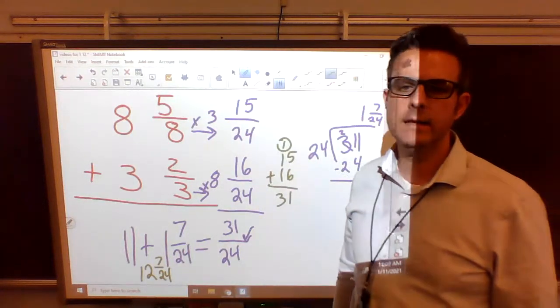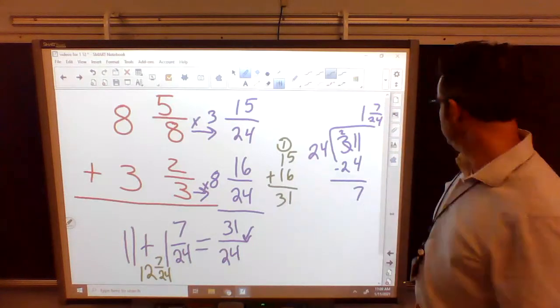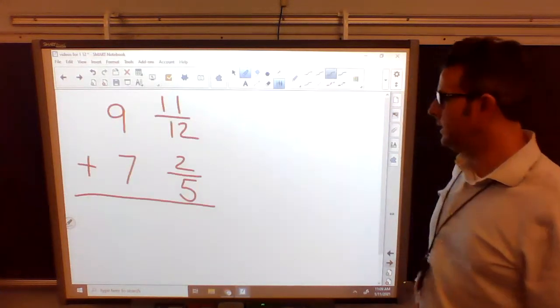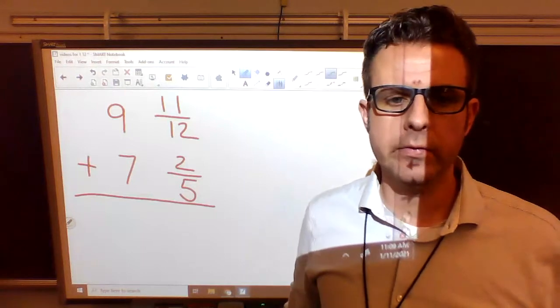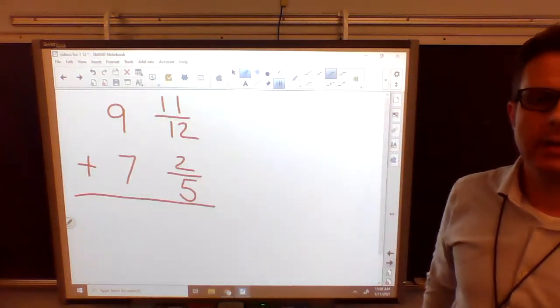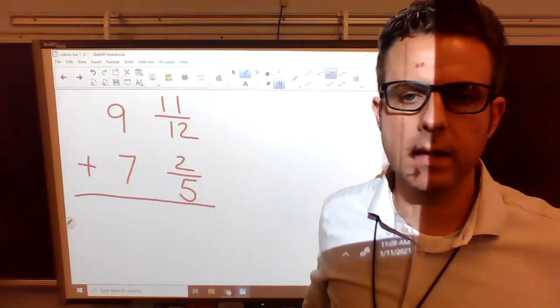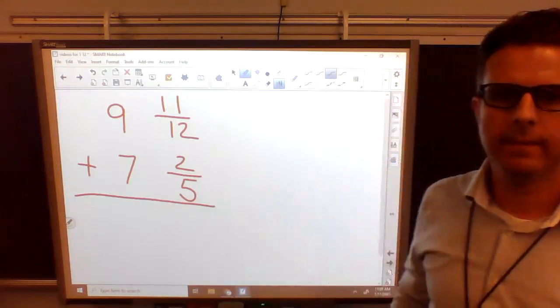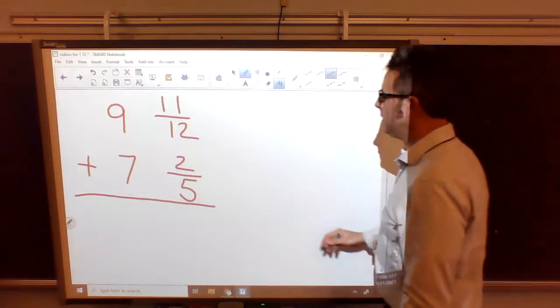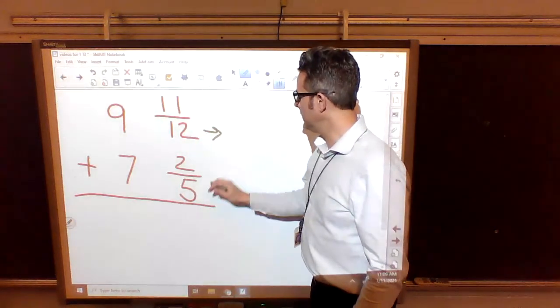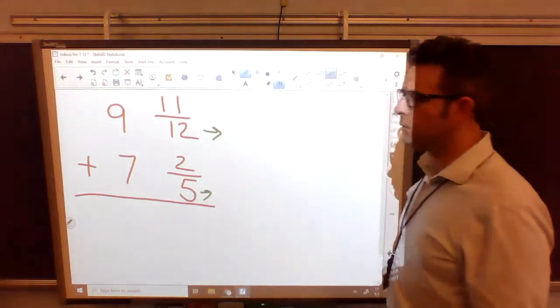Make sure you all have written this down. So this is the last one we're going to do today. 9 and 11/12 plus 7 and 2/5. What I would like you to do, try it on your own. Hit pause real quick, get your final answer, then hit play and see if it's the same. All right, so the first thing we have to do, I'm going to go quick. We have to find the least common multiple of 12 and 24.